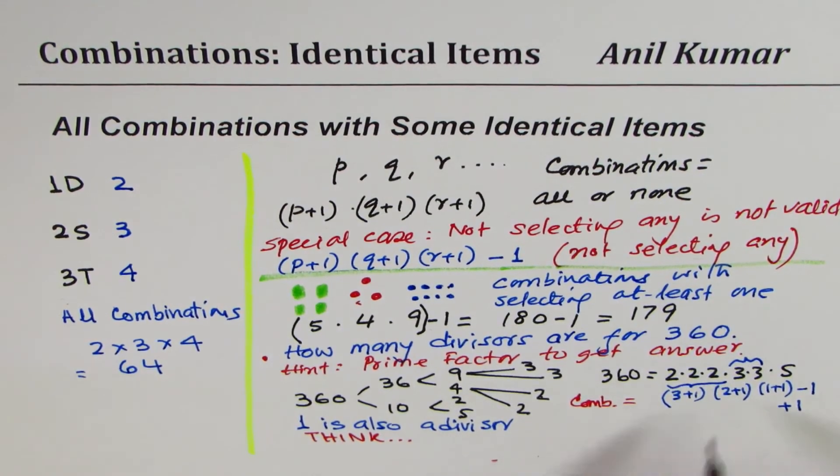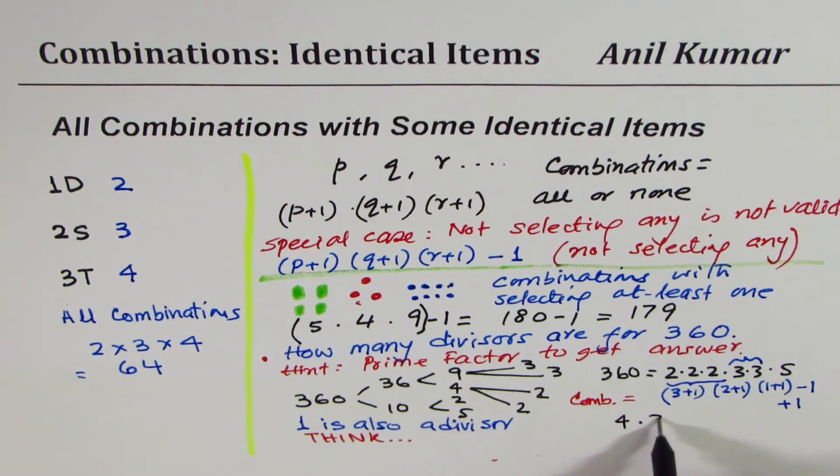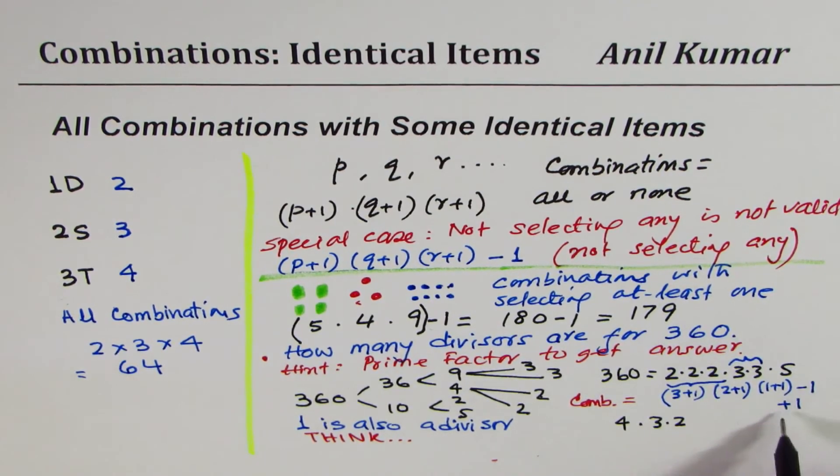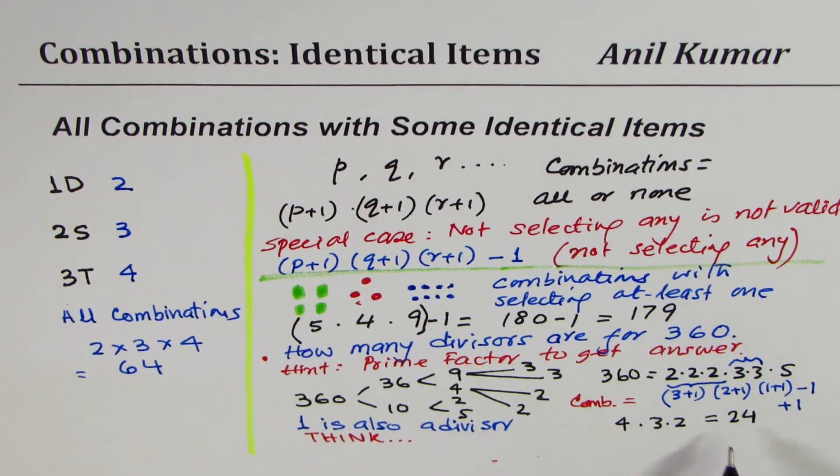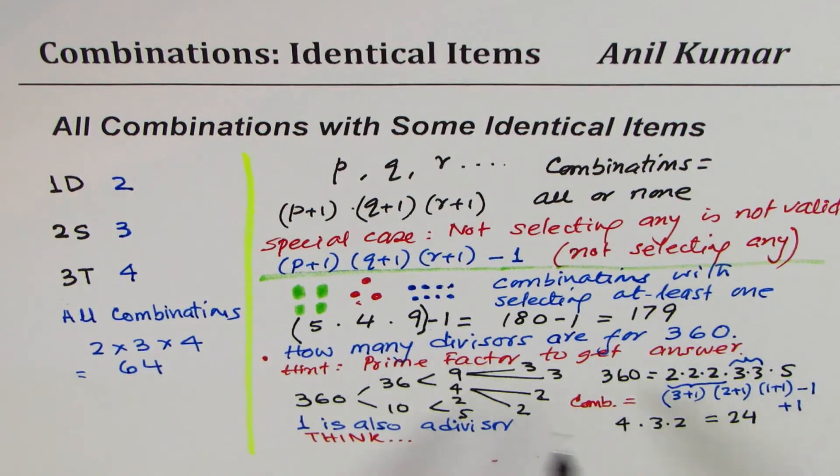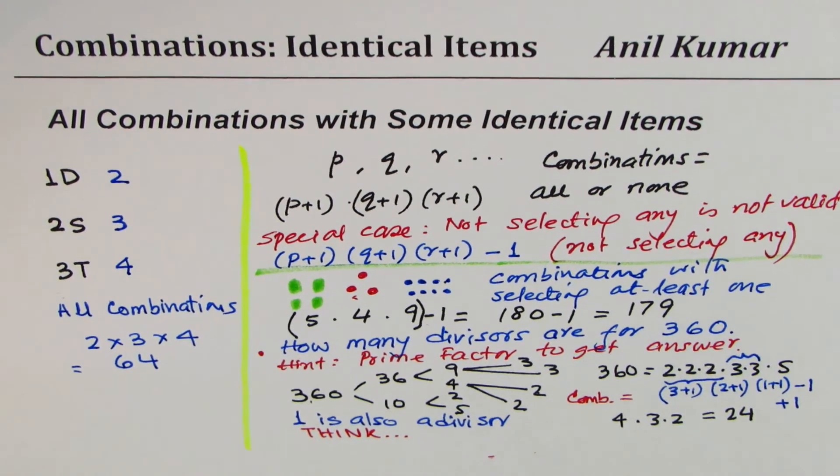How many of these? 3 plus 1 is 4, so we get 4 times 3 times 2. Plus and minus 1 cancel out. 4 times 3 is 12, 12 times 2 is 24. So we have 24 divisors for the number 360.